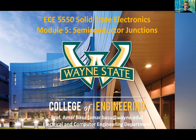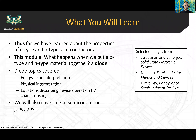Hi everybody. Today we are going to continue on with semiconductor junctions, module five. The goal for today is to cover the behavior of the semiconductor junction — the diode — in forward and reverse bias. We're going to start by looking at the behavior in the energy band model, the physical model, and then derive an equation that describes the IV characteristics in forward and reverse bias. This is mathematically and conceptually the most involved part of the diode module, building on the more fundamental concepts from the previous two lectures.